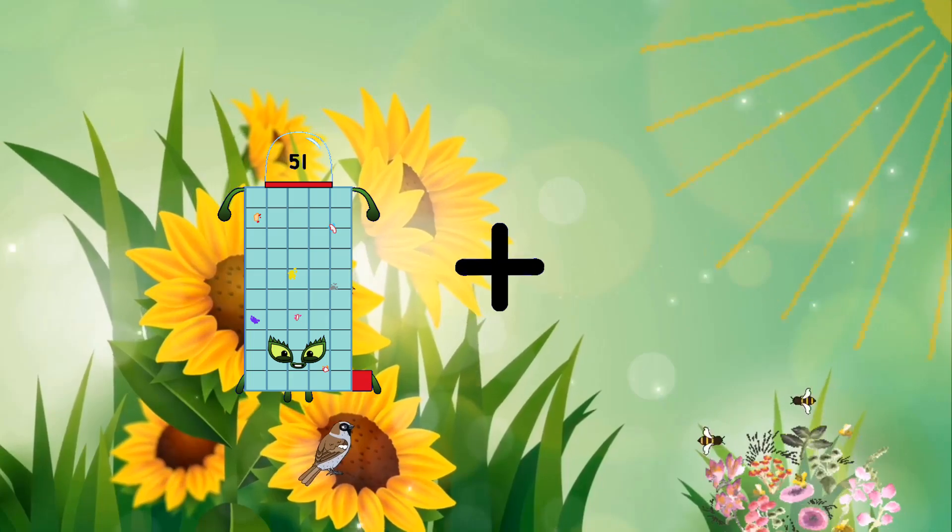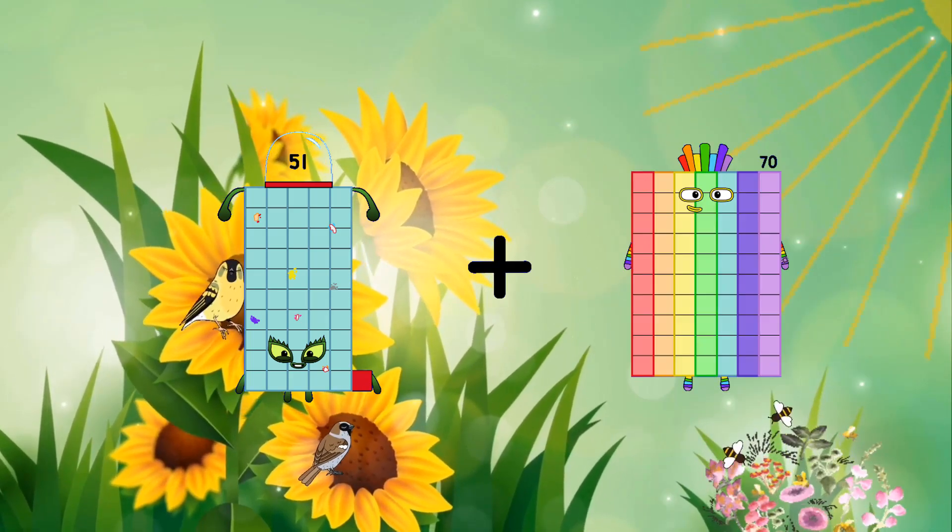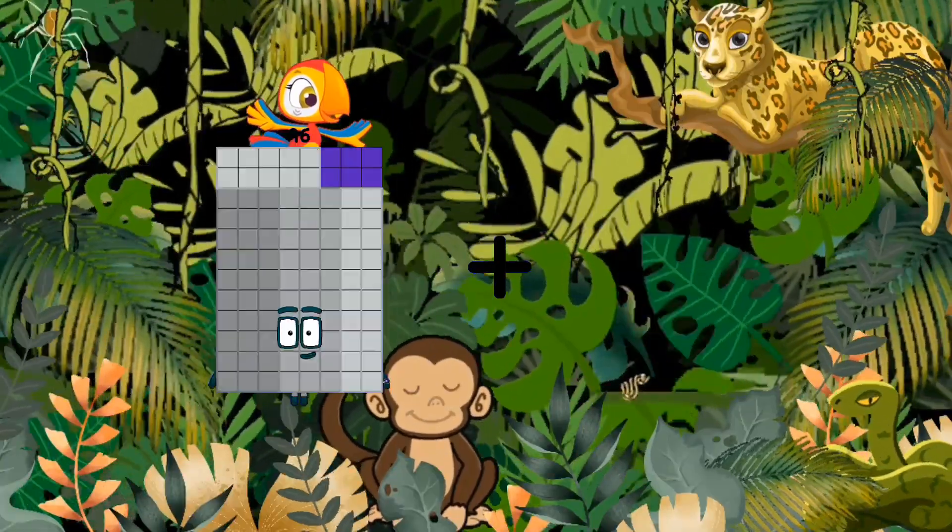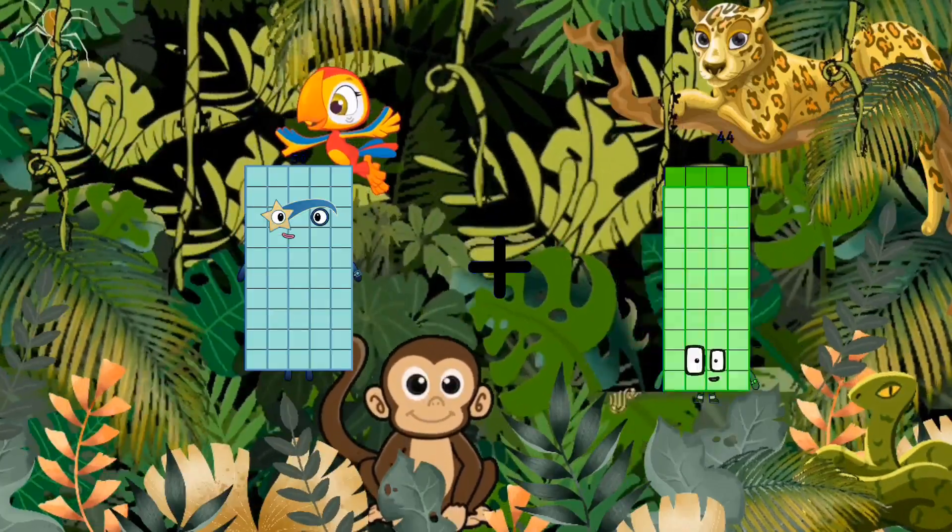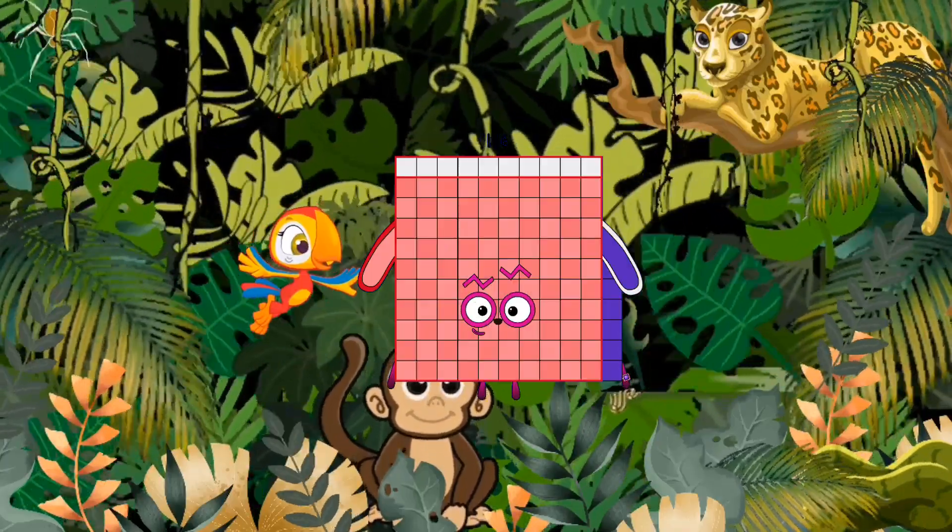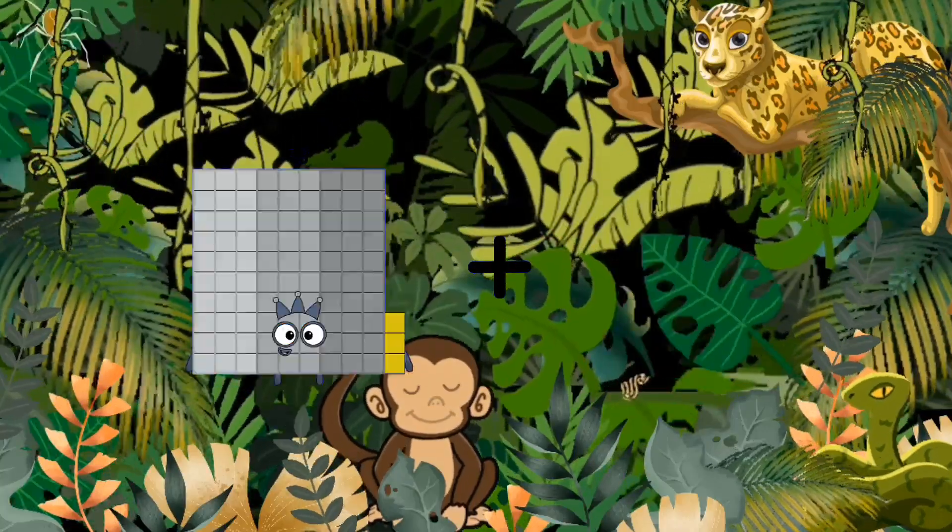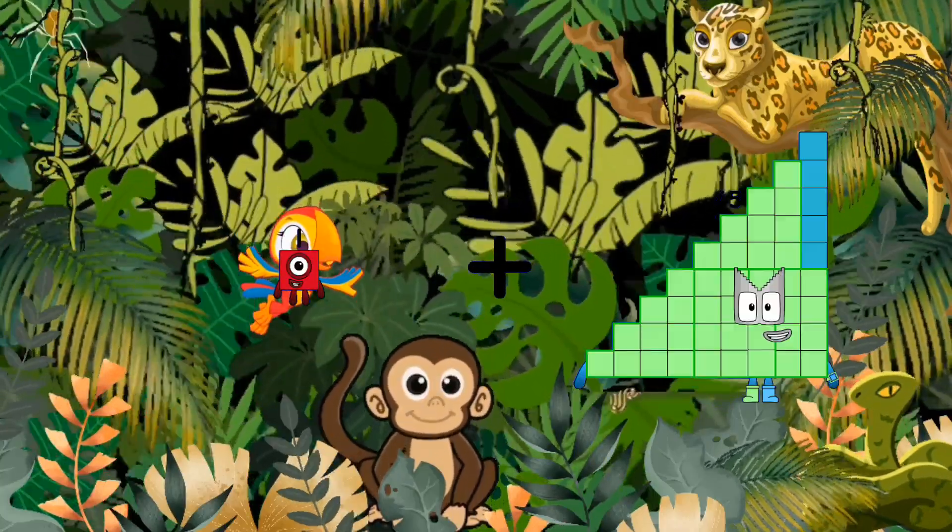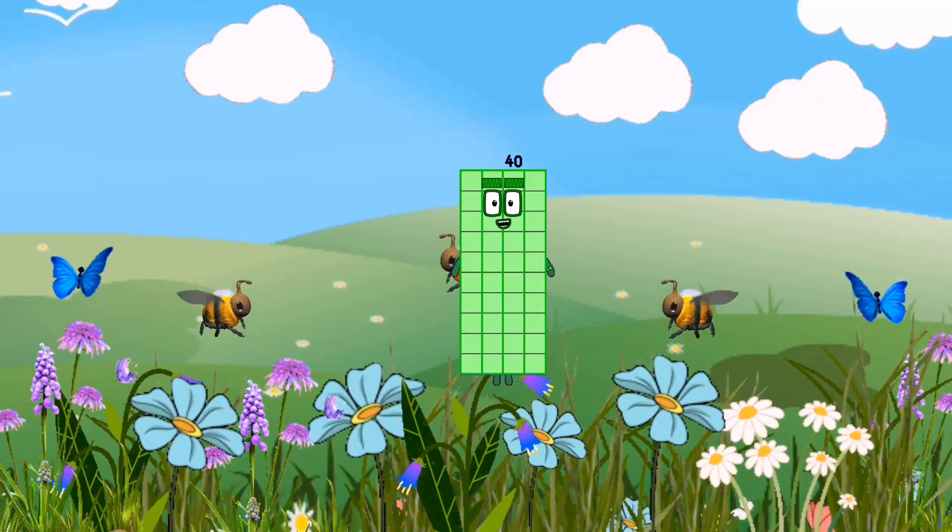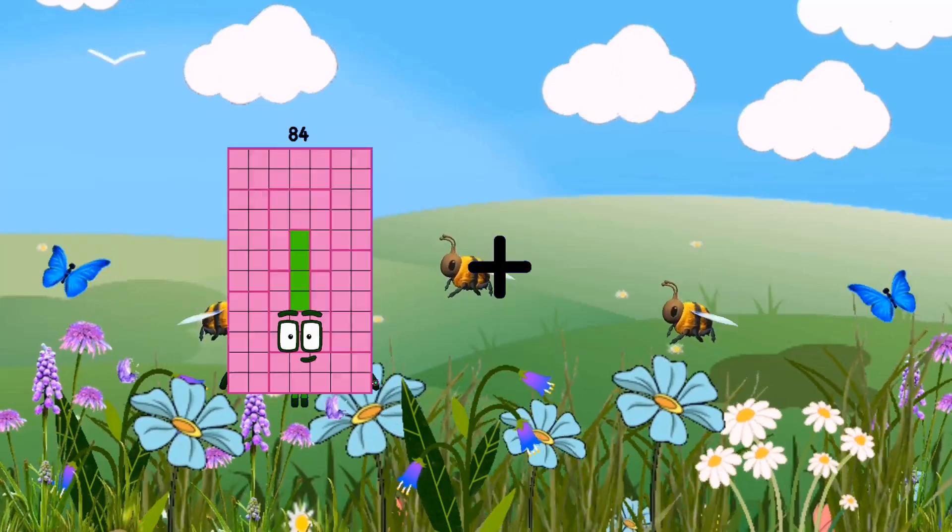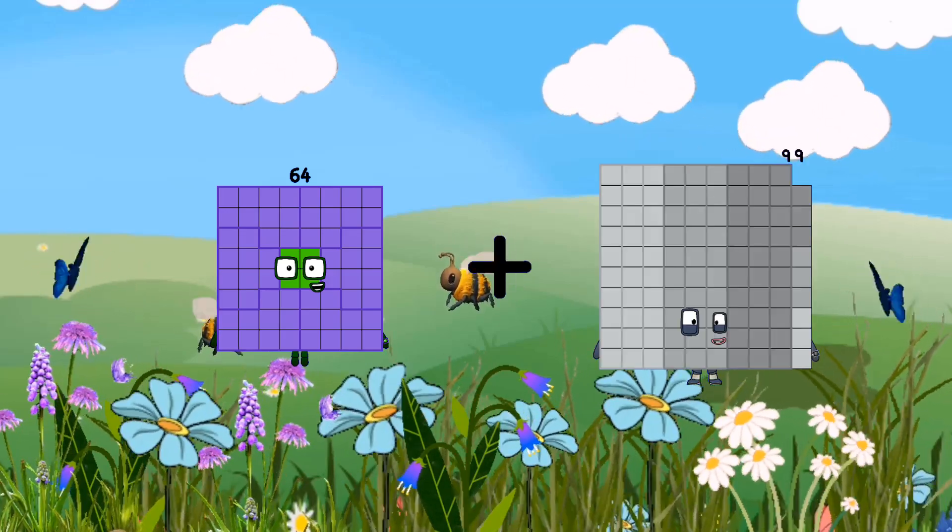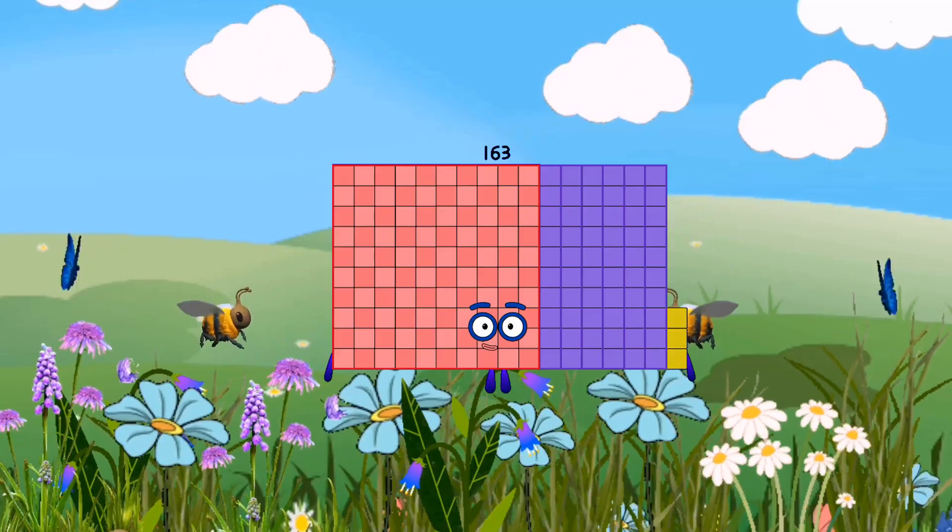51 plus 70 equals 121. 50 plus 66 equals 116. 1 plus 39 equals 40. 64 plus 99 equals 163.